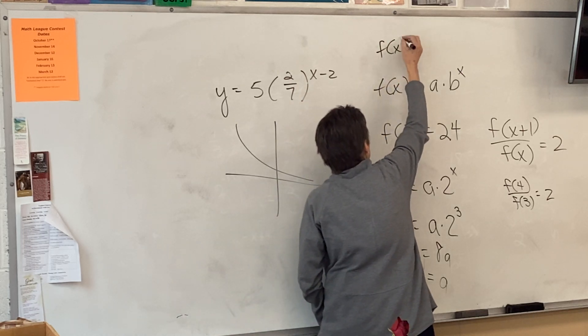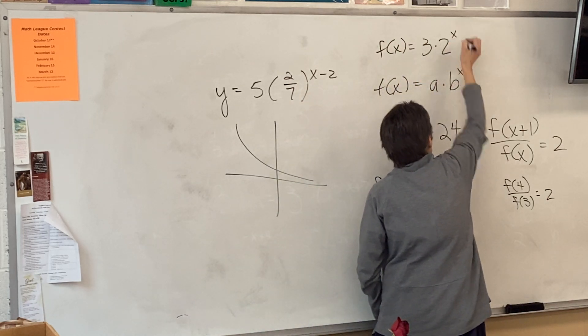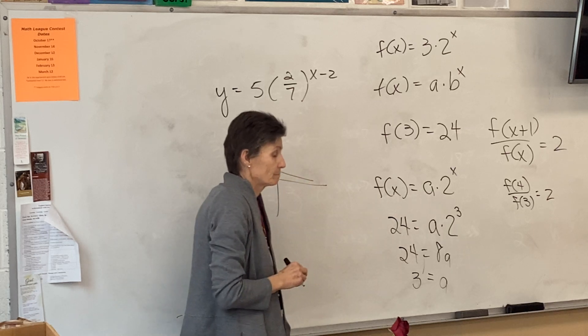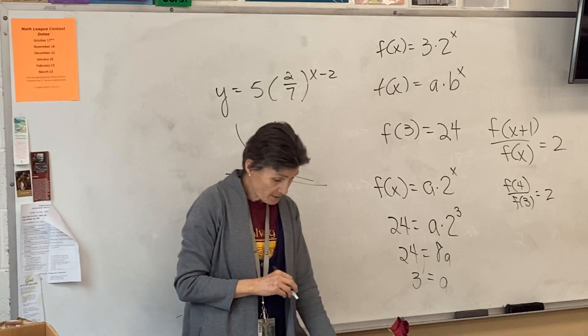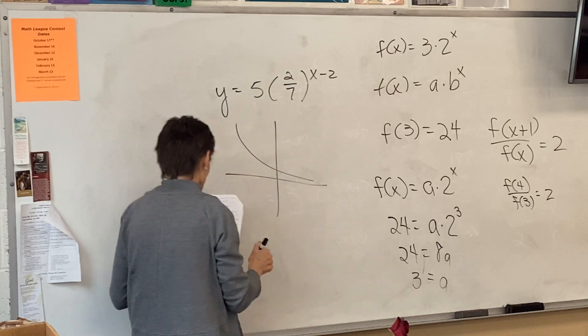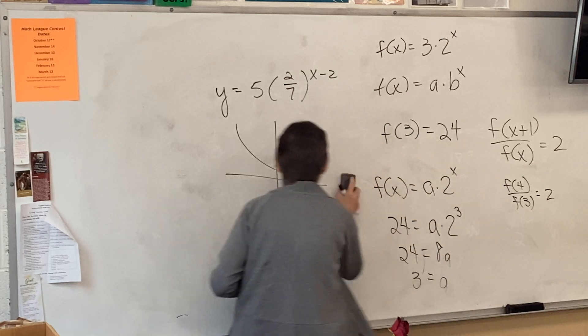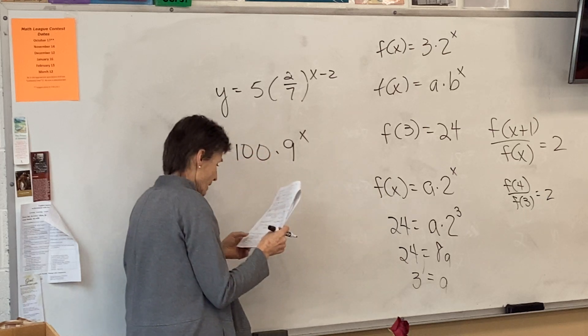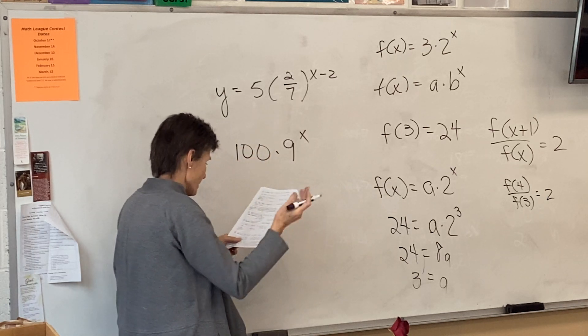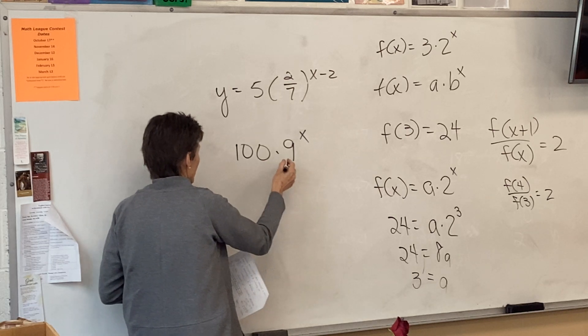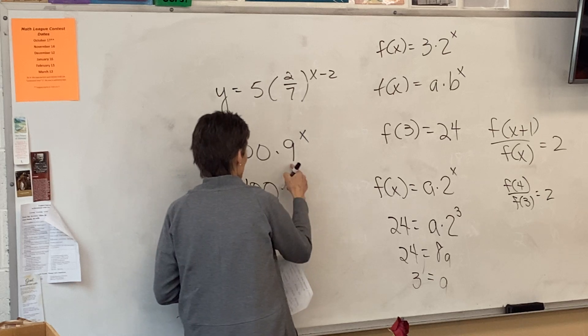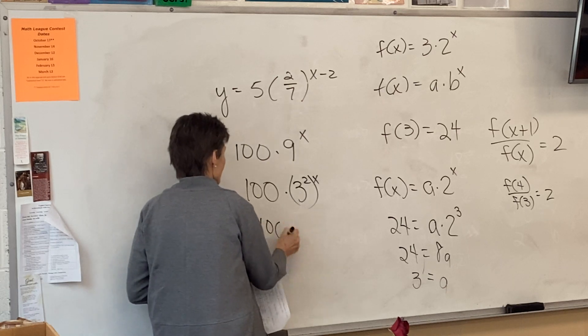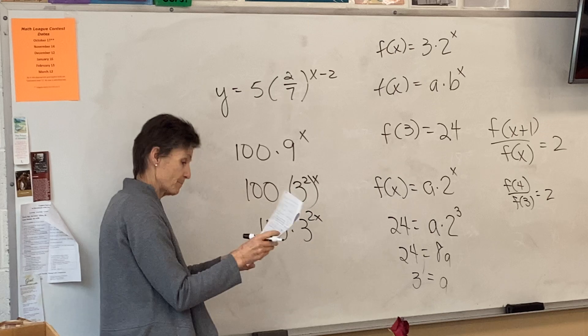And I know that if y is 24, then x is 3. So 24 equals 8a, so a is 3. So my equation is 3 times 2 to the x, which is equivalent to 100 times 9 to the x.